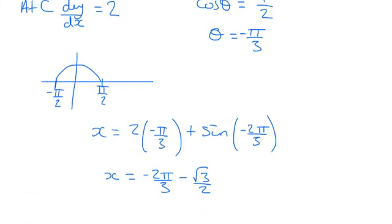Sine of negative 2π over 3 is negative root 3 over 2. So that's my exact coordinate for x. And for y, which is 4 sine θ, 4 sine negative π over 3. So x comes out at negative 2π over 3 minus root 3 over 2.